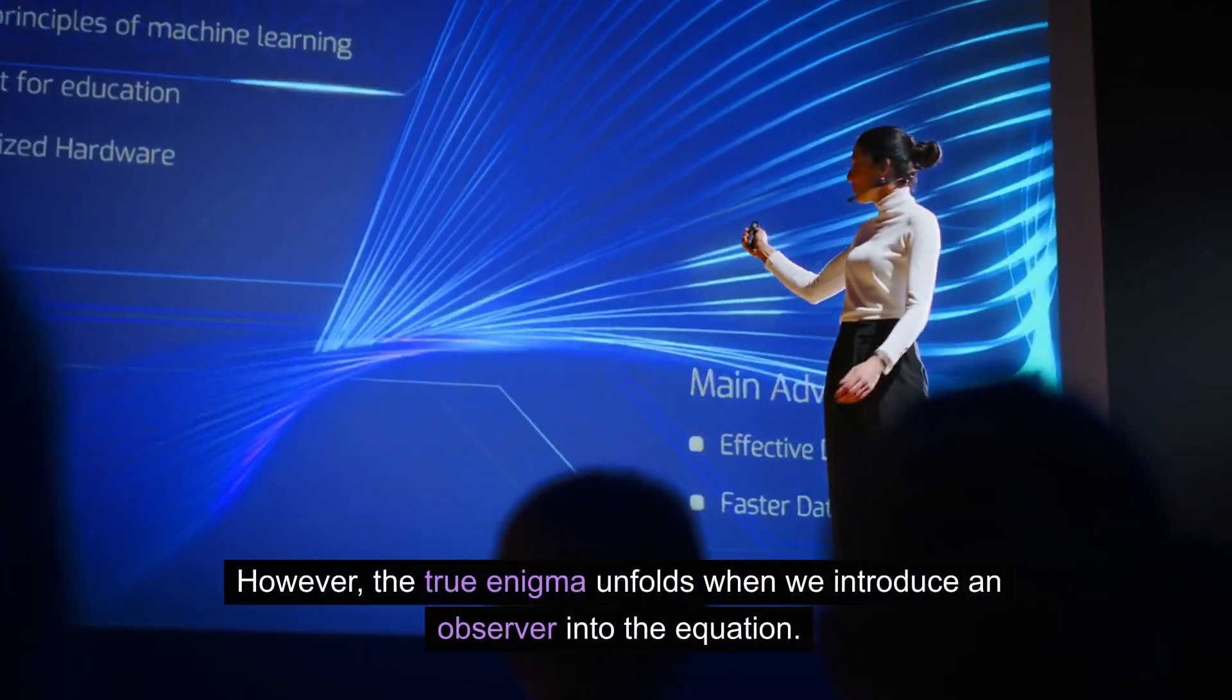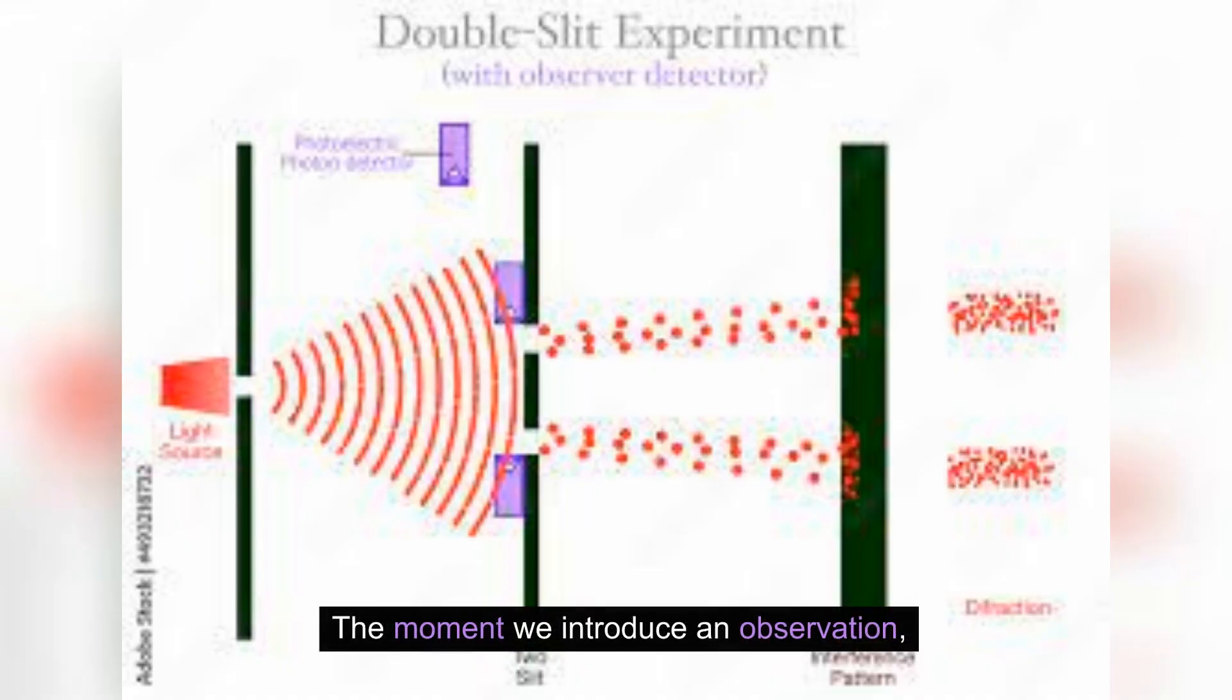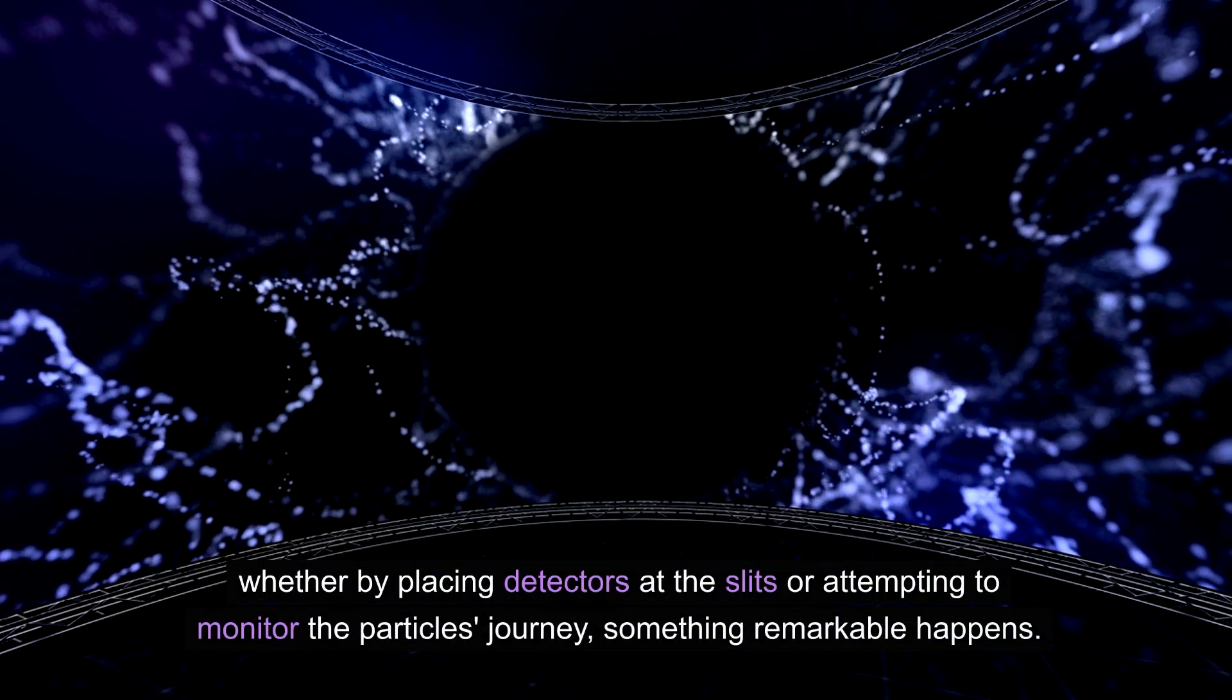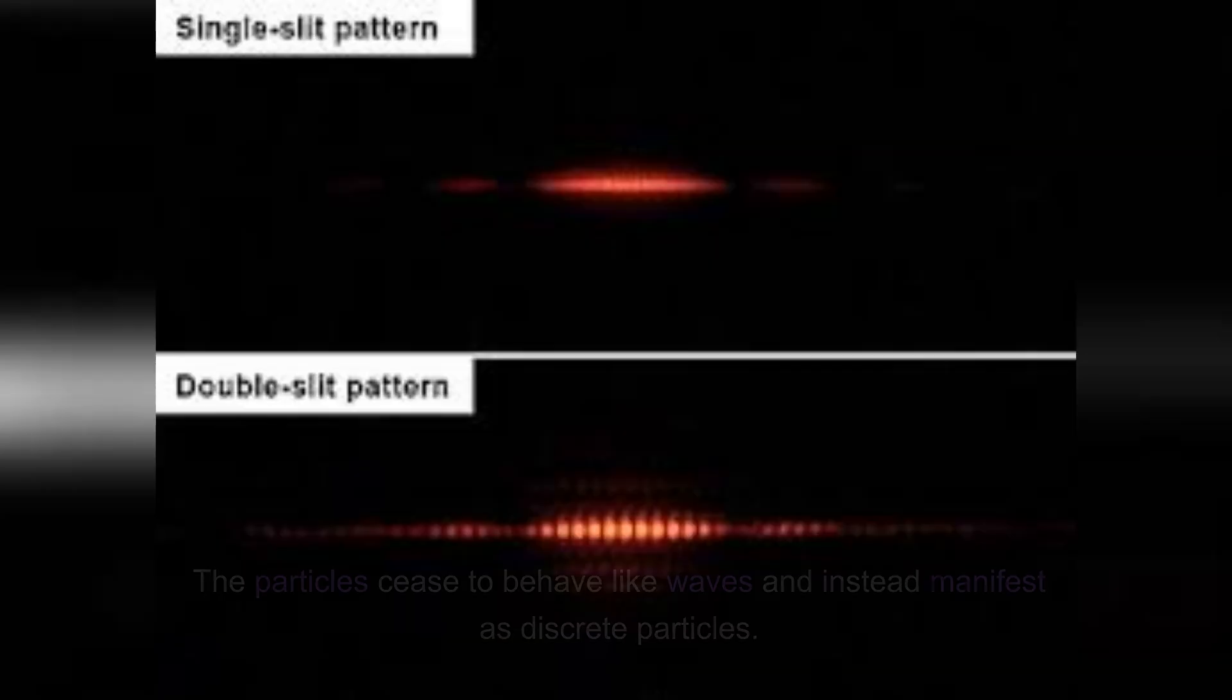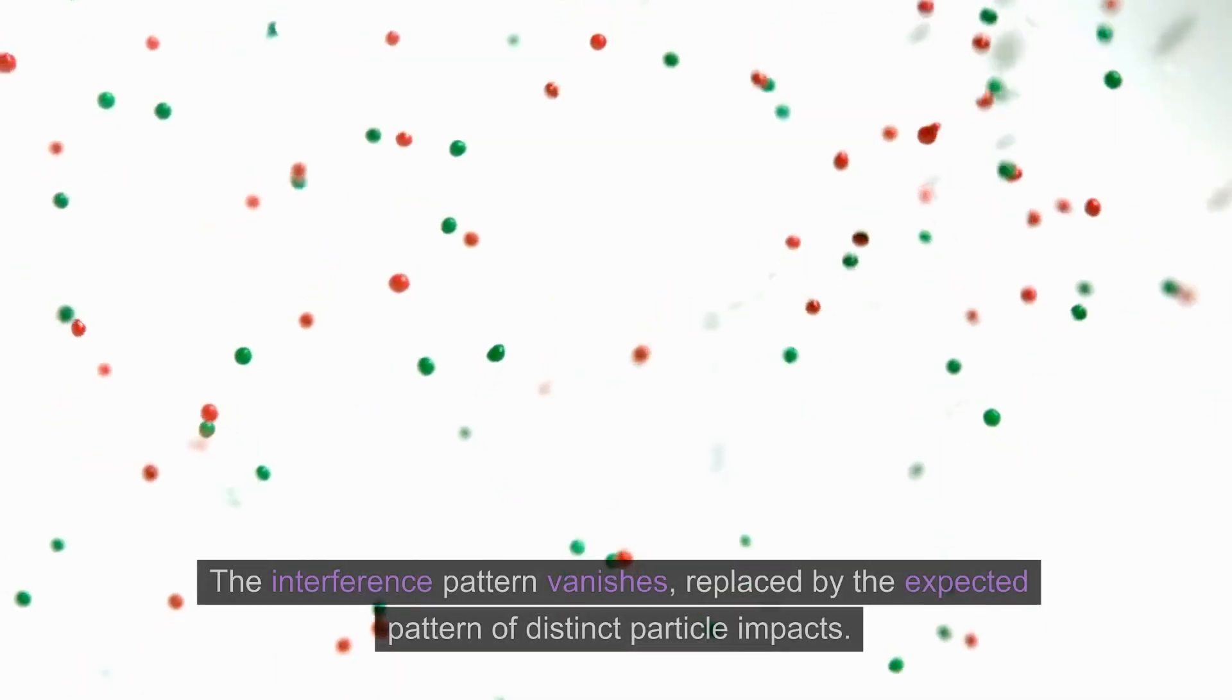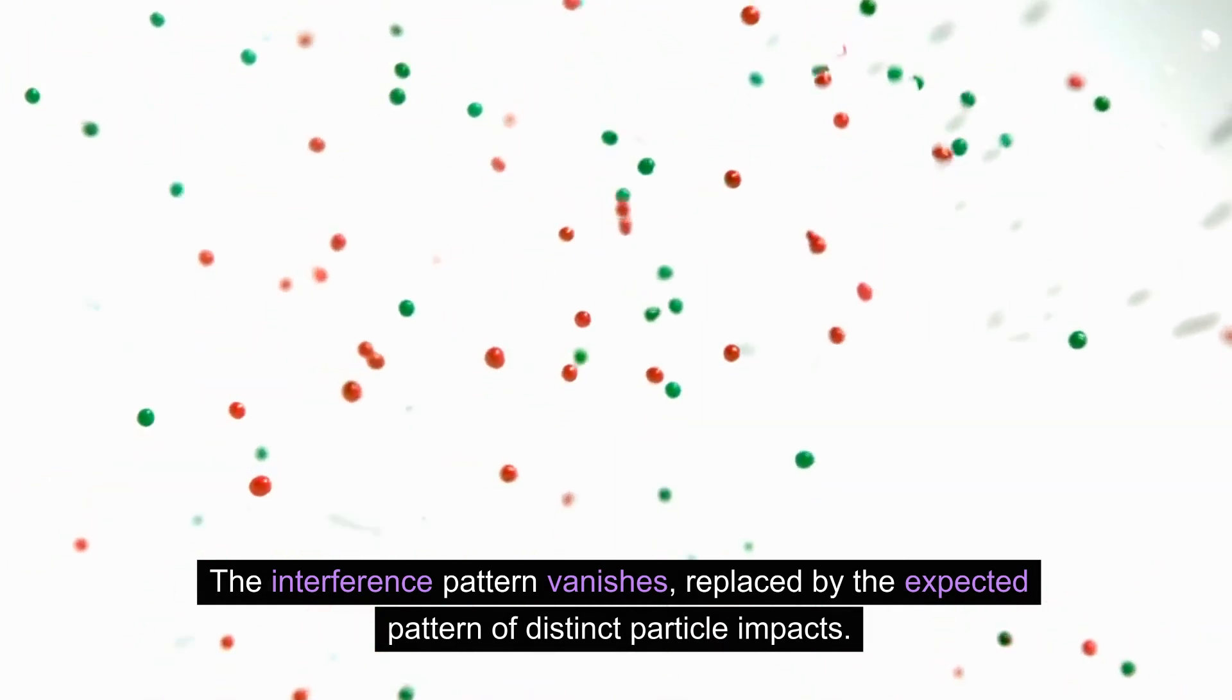However, the true enigma unfolds when we introduce an observer into the equation. The moment we introduce an observation, whether by placing detectors at the slits or attempting to monitor the particle's journey, something remarkable happens. The particles cease to behave like waves and instead manifest as discrete particles. The interference pattern vanishes, replaced by the expected pattern of distinct particle impacts.